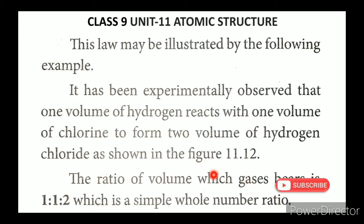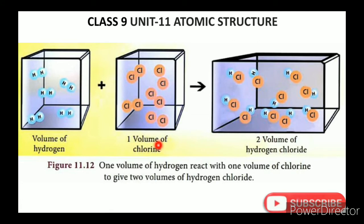The ratio of volumes is 1 is to 1 is to 2, which is a simple whole number ratio. One volume of hydrogen plus one volume of chlorine gives two volumes of hydrogen chloride.